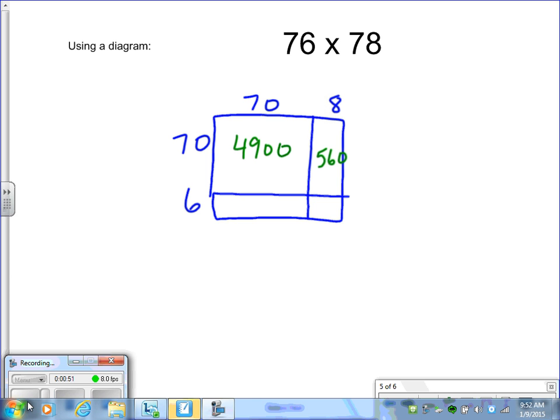6 times 70, 6 times 7 is 42, but remember that 70 has a zero, so we have to annex that zero.